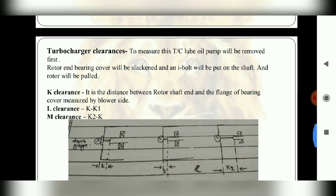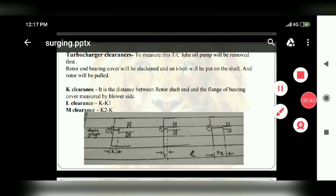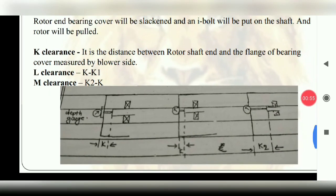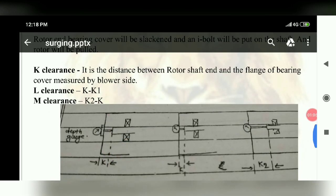If we go further, we will talk about the turbocharger clearances. So basically there are three types of clearances: K clearance, L clearance, and M clearance. Distance between rotor shaft and bearing flange cover. I will show you. This is the rotor shaft and this is the bearing end cover. So this distance will be normally K.